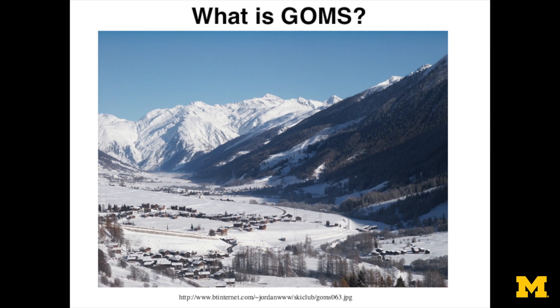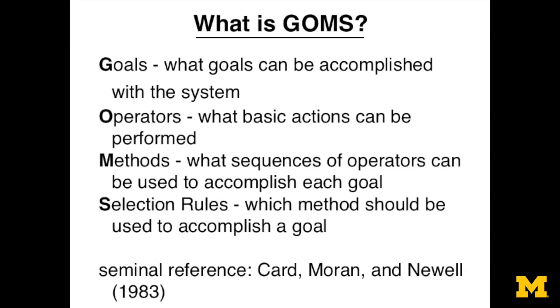All this relates to something called GOMS. What we're talking about is GOMS, which is short for Goals, Operators, Methods, and Selection Rules — this is on page 23-4. This is both a calculation method and a way of thinking about how we analyze primarily cognitive activities.